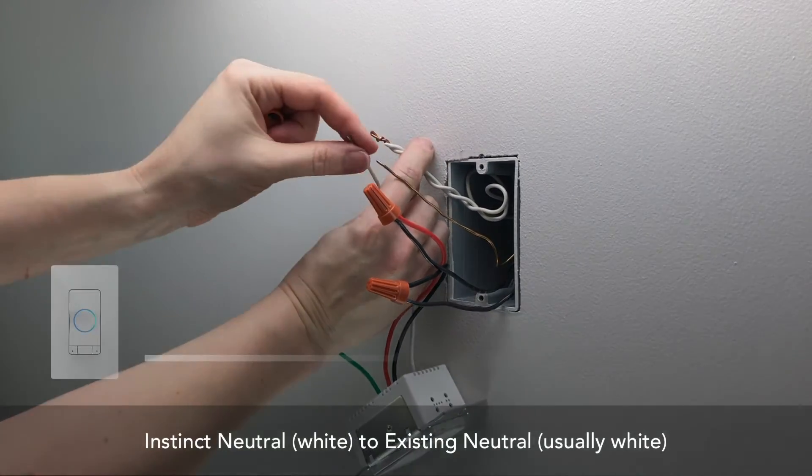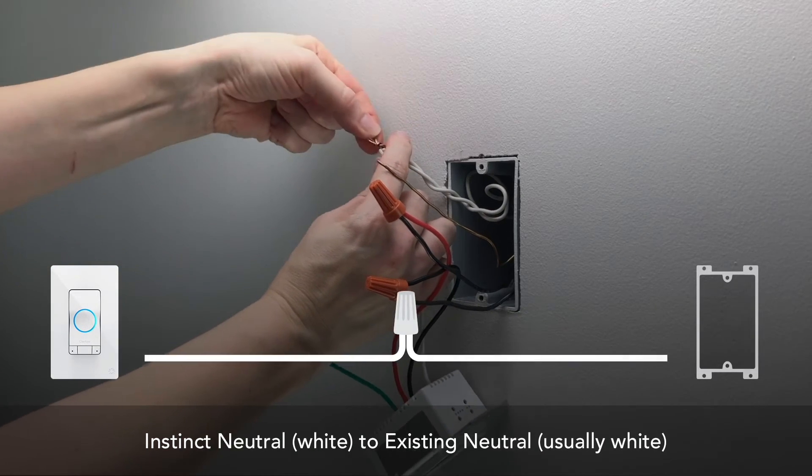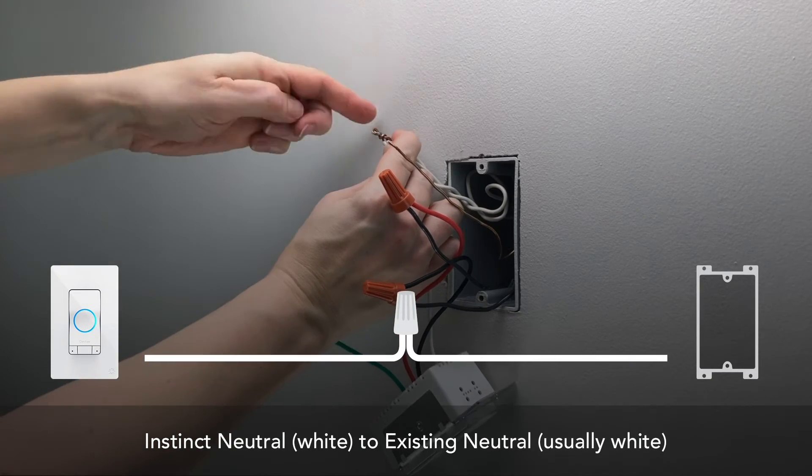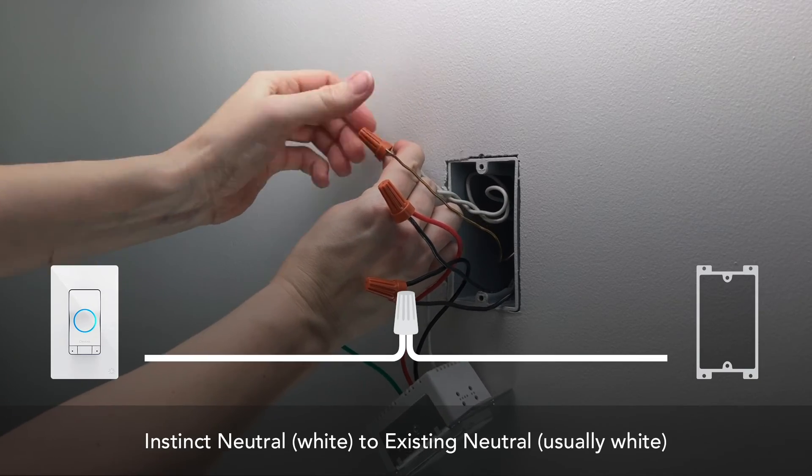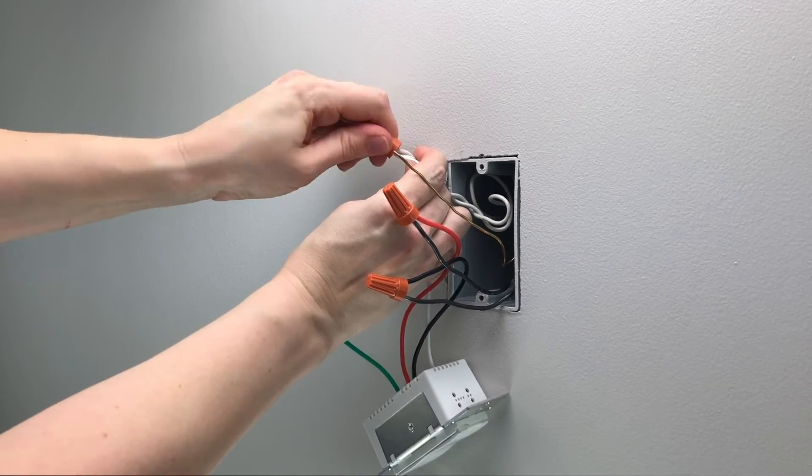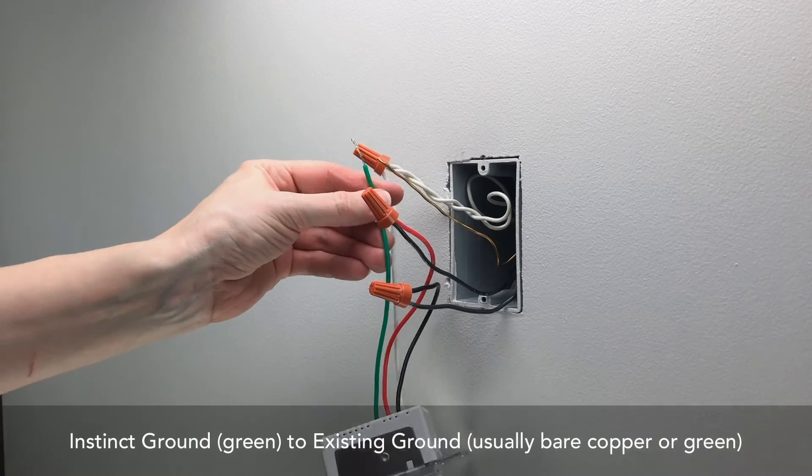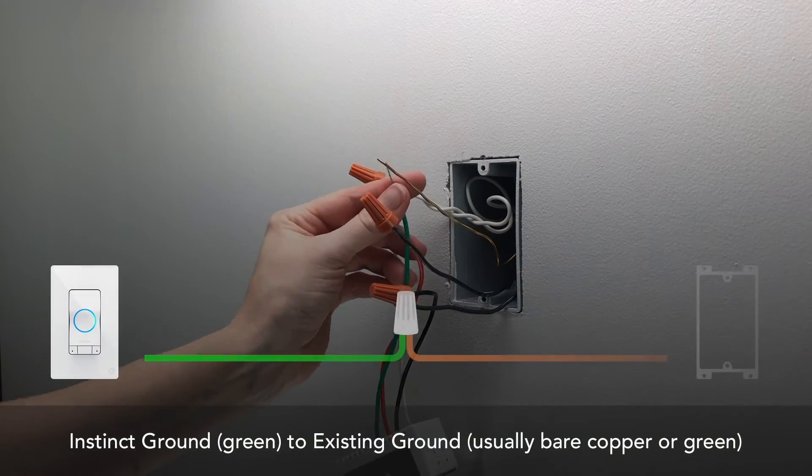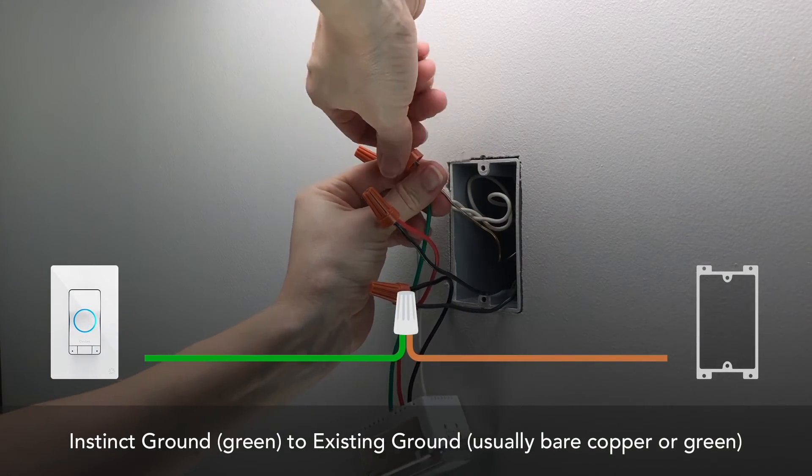Remove the wire nut from the white neutral wire bundle in the gang box and attach Instinct's white neutral wire to that grouping of wires. Finally, connect the green ground wire on Instinct to the ground wires in the gang box.